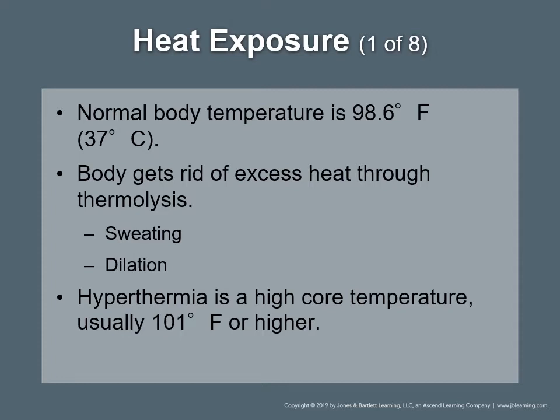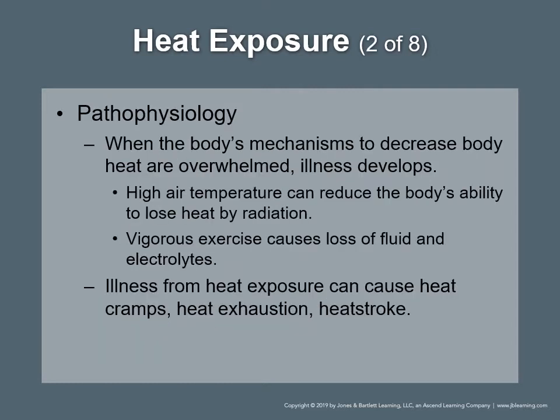When the body itself produces excess heat, it will try to rid itself of that heat through thermolysis. The two most efficient methods to decrease heat are sweating and dilation of peripheral blood vessels. When the body is exposed to or generates more heat energy than it can lose, hyperthermia can result. Hyperthermia is a high core temperature, usually 101 degrees or higher. When the body's mechanisms to decrease body heat are overwhelmed, illness develops. High air temperature reduces the body's ability to lose heat by radiation; high humidity reduces heat loss through evaporation; vigorous exercise causes loss of fluid and electrolytes.